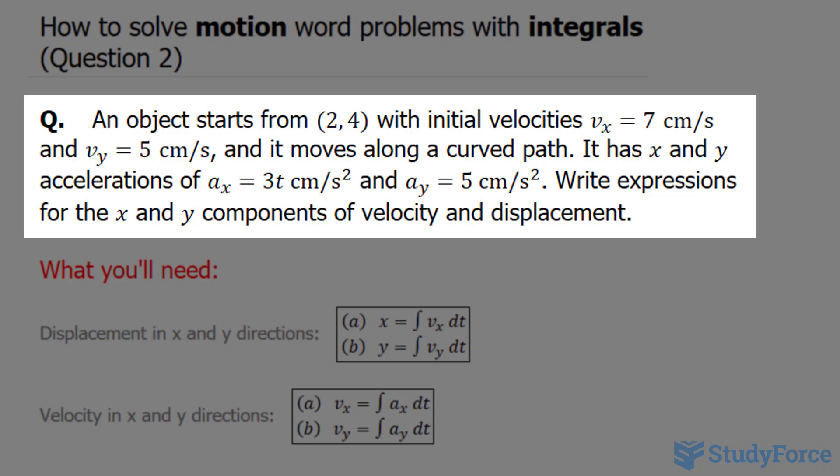These are the x and y components of the velocity vector, and it moves along a curved path. Its x and y components for acceleration are a_x equals 3t cm per second squared, and a_y equals 5 cm per second squared. Write expressions for the x and y components of velocity and displacement.